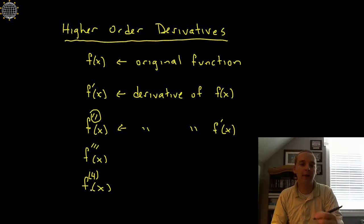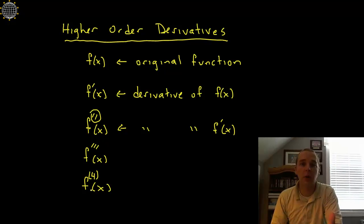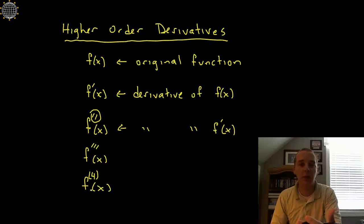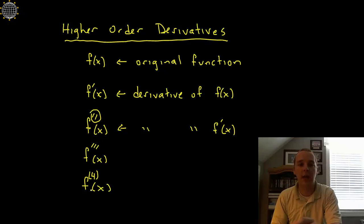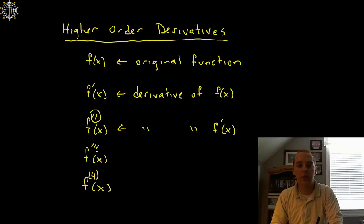The reason you have to put them in parentheses is we don't want to confuse anyone reading our work into thinking we mean an exponent. We don't mean raise it to the fourth power. The parentheses notation says we want to take four derivatives of this function — and the same thing for a fifth, sixth, or twenty-second derivative: just put that number in parentheses right there.